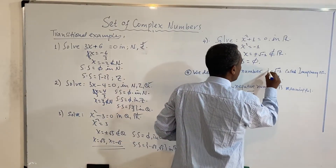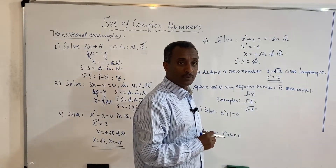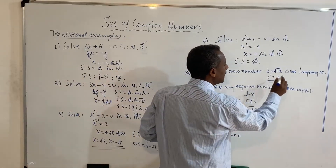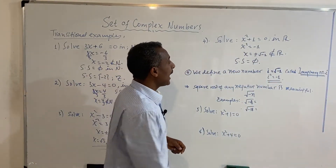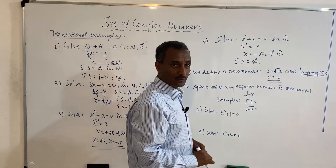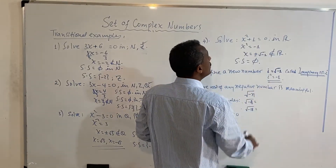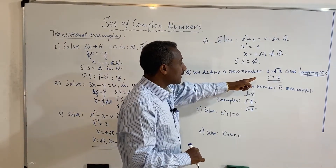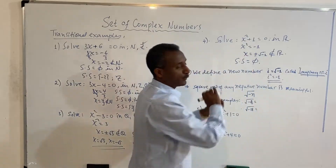The square root of negative 1 is called i. I is called the imaginary number unit, and the imaginary number is i. So i equals the square root of negative 1, and therefore i squared equals negative 1. The square root of any negative number is now meaningful because of this imaginary number.